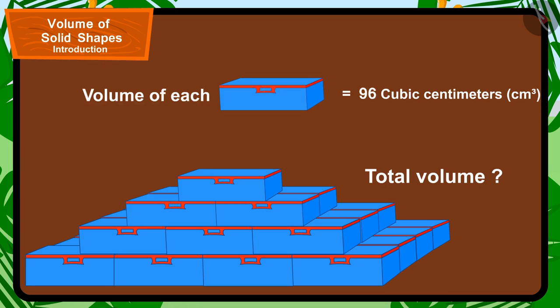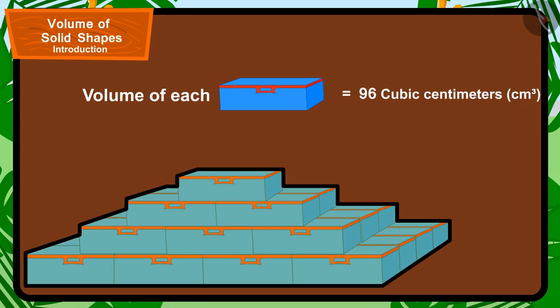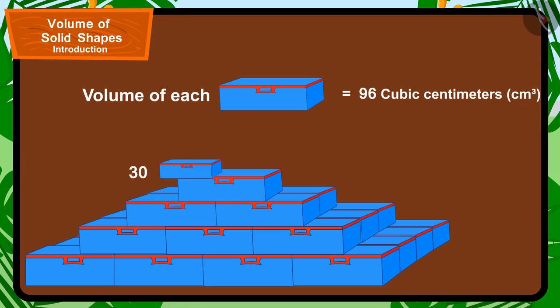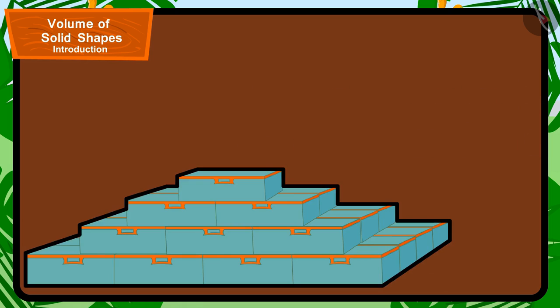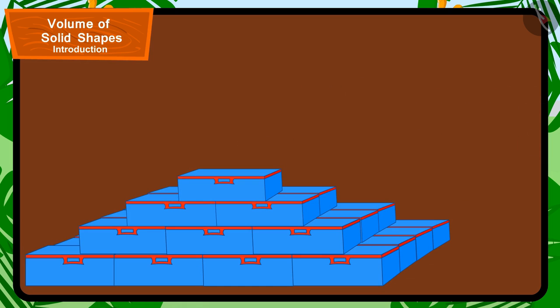The volume of a compass box is equal to 96 cm³, and Babban has used a total of 30 compass boxes in this shape. To find the volume of the total number of compass boxes being used in the shape created by Babban, we will have to multiply the volume of one compass box by the number of total compass boxes.